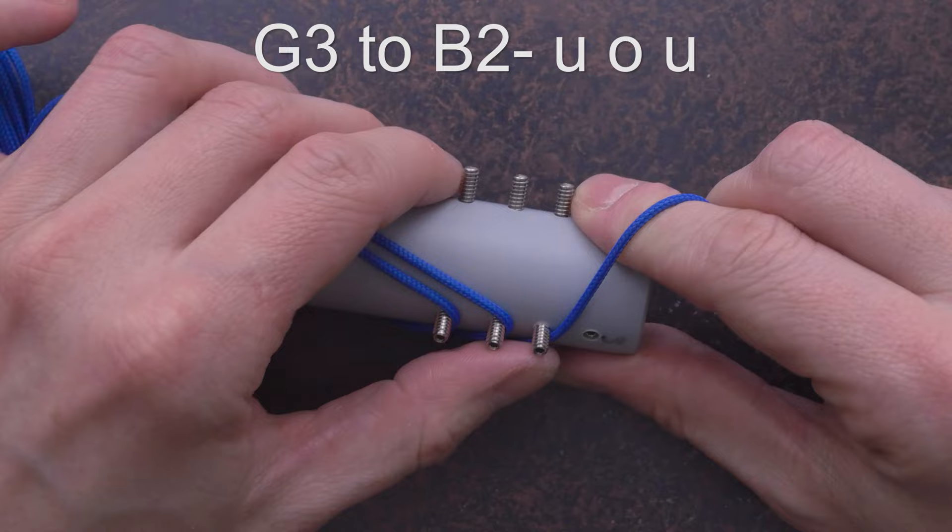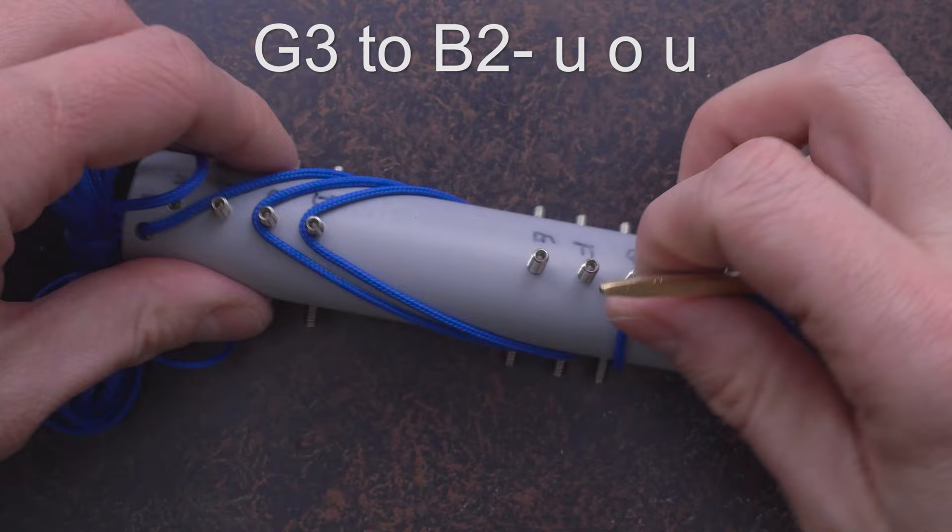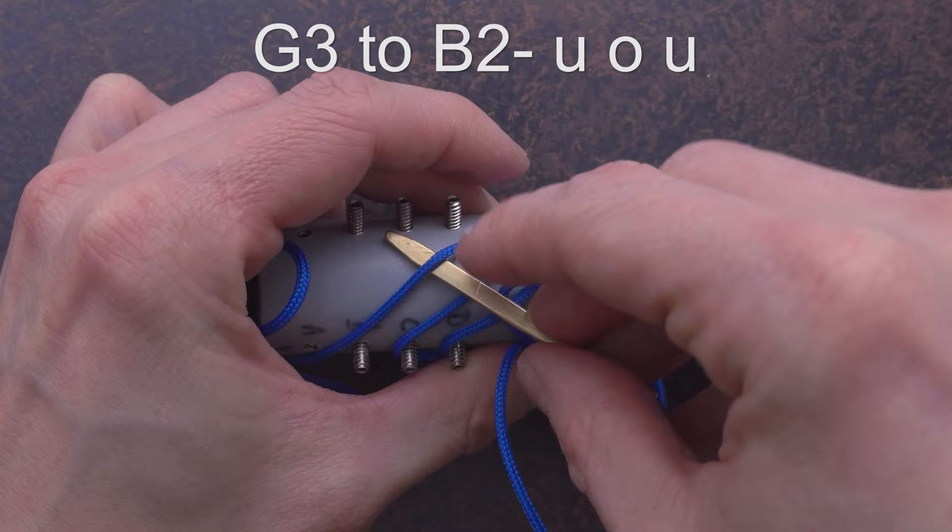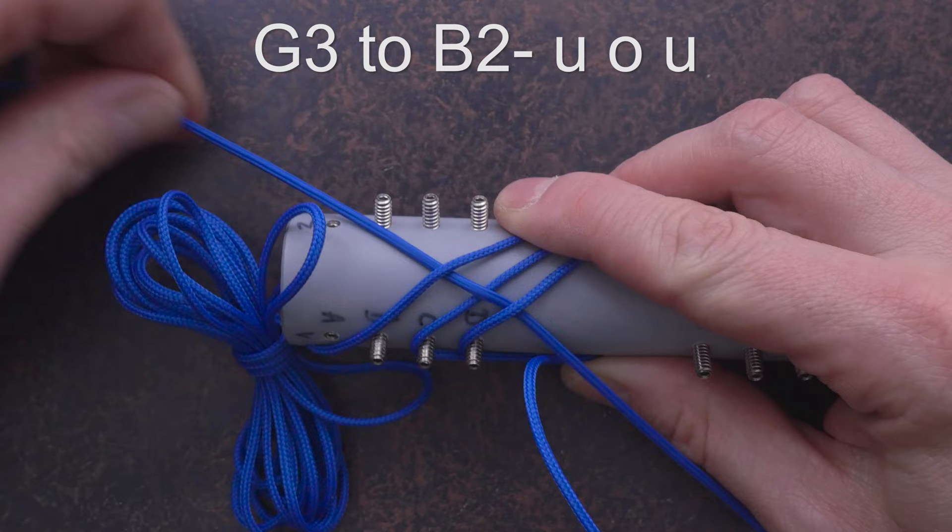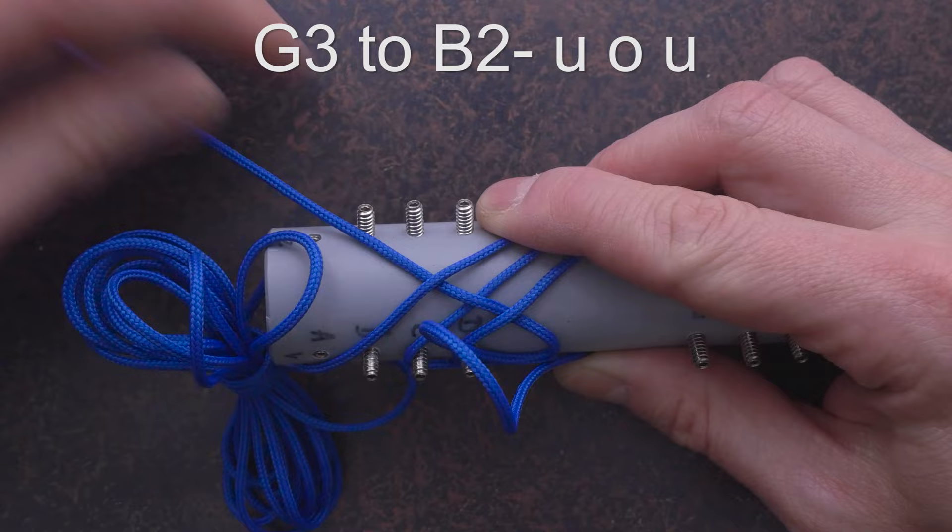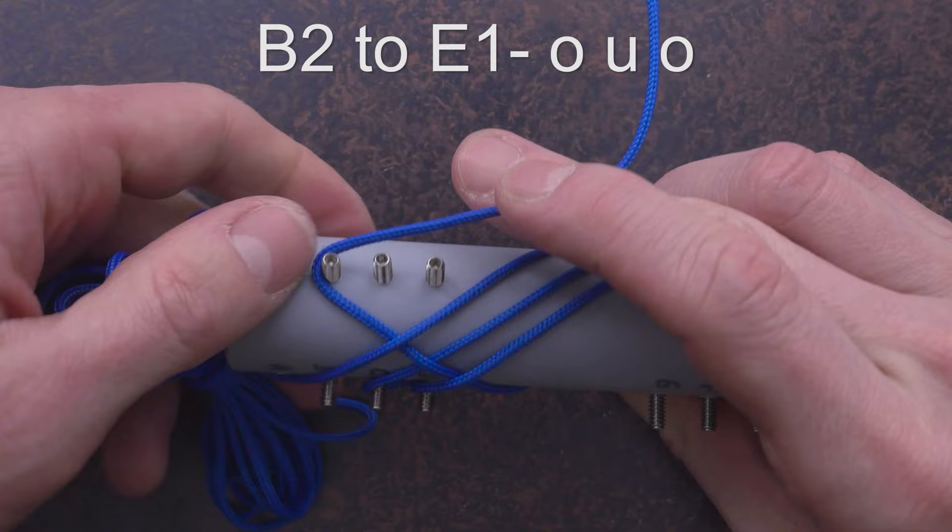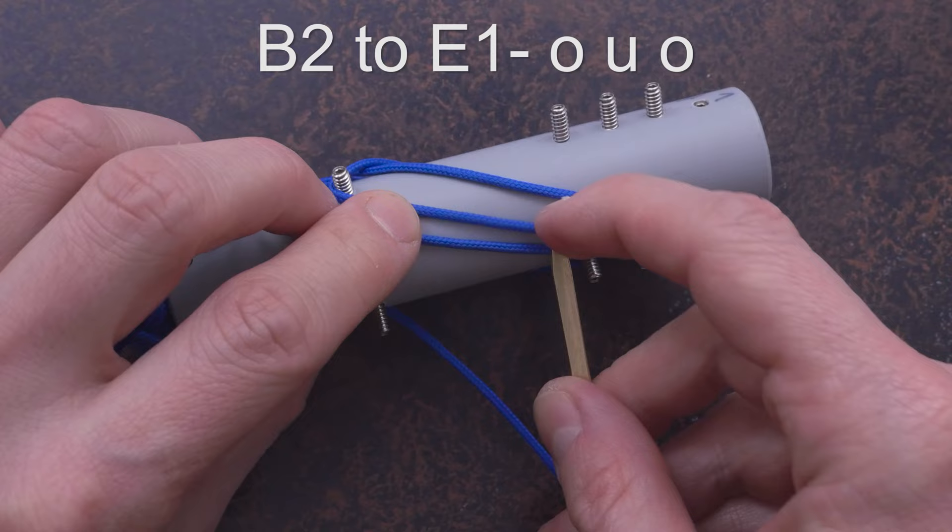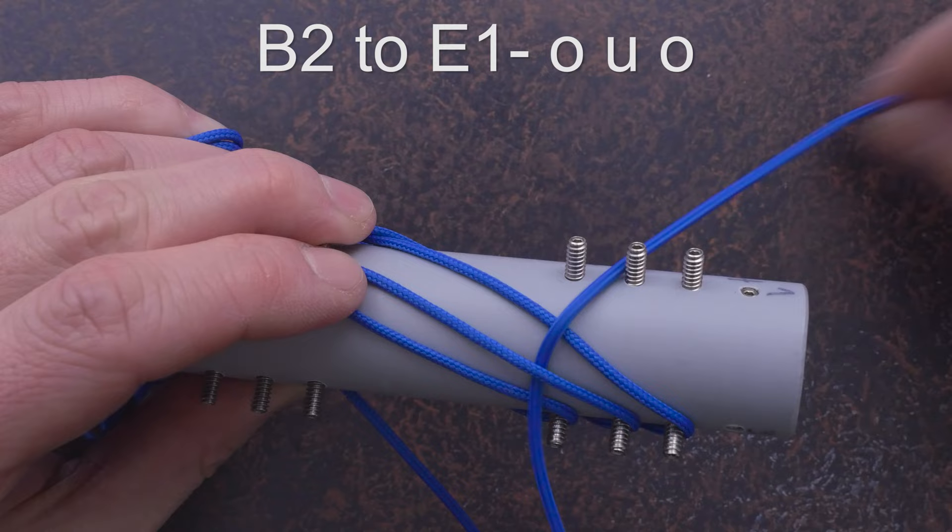From G3, we're going to move to B2 going under, over, under. From B2, we're going to move to E1, going over, under, over.